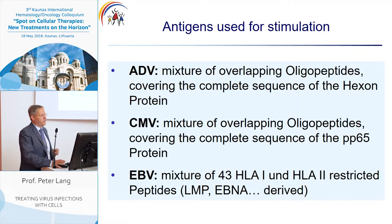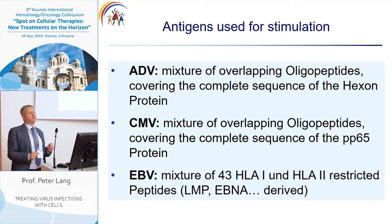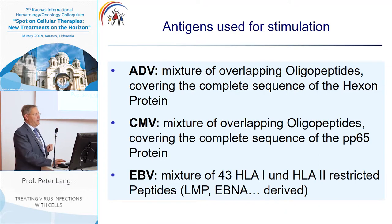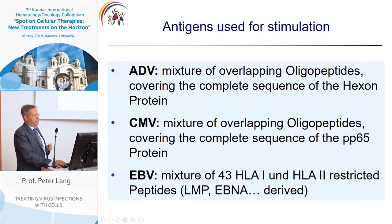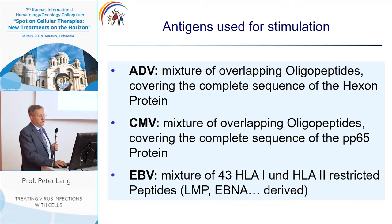Which antigens do we use? For ADV, we use a mixture of overlapping oligopeptides covering the complete sequence of the hexon protein. For CMV, we also use overlapping oligopeptides covering the complete sequence of the PP65 protein. For EBV, we use a mixture of 43 HLA class I and HLA class II restricted peptides derived from LMP or EBNA, and this mixture covers almost all HLA alleles expressed by donors and patients.